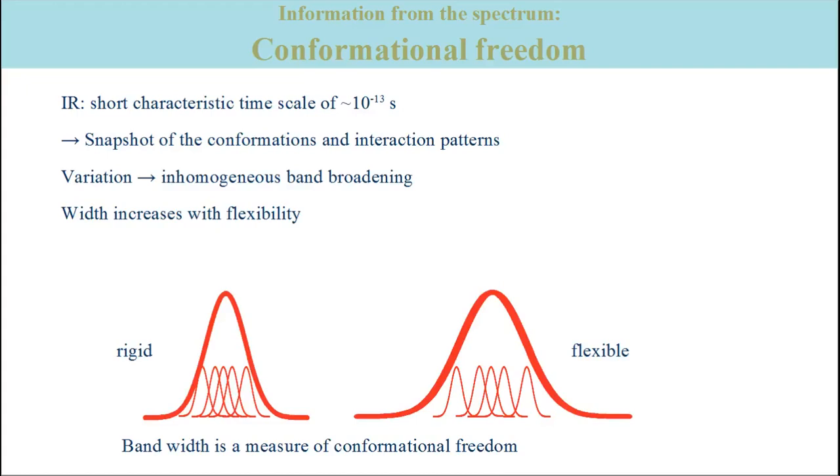For molecules that bind to proteins, the restriction of conformational freedom is a natural consequence of binding. This often reduces the bandwidth by a factor of two. For example, phosphate bands of GTP become sharper when the molecule binds to RAS and ubiquinone is in a more rigid environment when bound to cytochrome BO3.